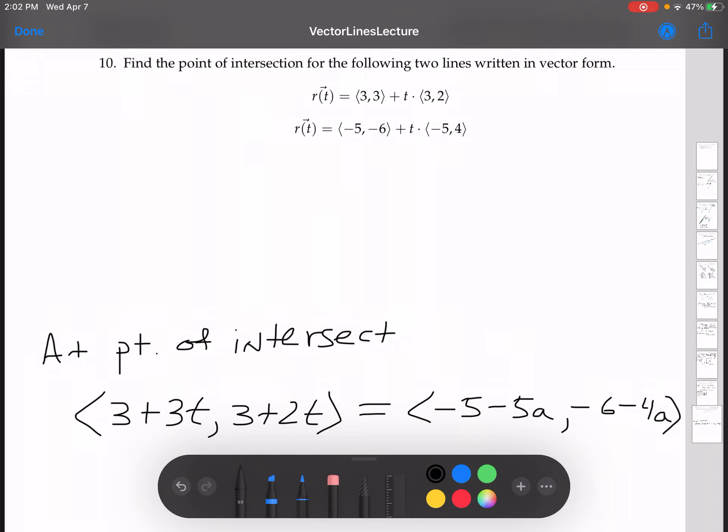All right, so two vectors in component form are equal when each of the components are equal. So that means that we know that this and this are equal, and that this and this are equal. So that means that we know that 3 plus 3t is equal to negative 5 minus 5a. And 3 plus 2t equals negative 6 minus 4a.